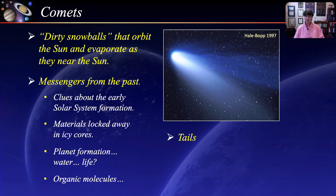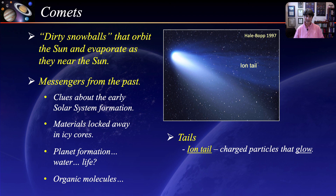While comets are in the outer solar system, they remain frozen and are extremely hard to detect. As the comet approaches the inner solar system, the solar radiation vaporizes the icy materials, and streams of gas and dust are released. The gas and dust is then pushed away by the radiation pressure and solar wind, causing the tails to form. As seen in this close-up of Hale-Bopp, two tails are formed. The bluish tail is called the ion tail and is made up of ionized gases that glow or emit light.